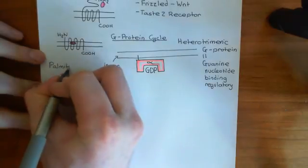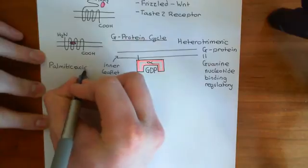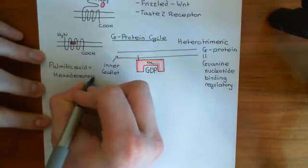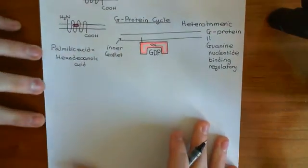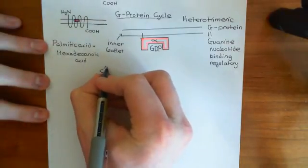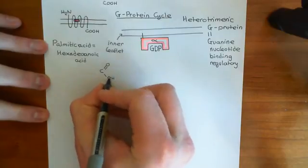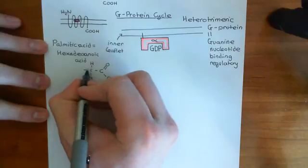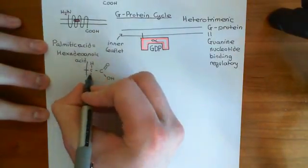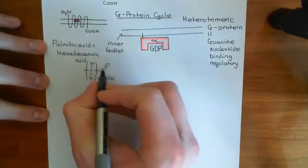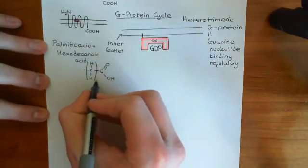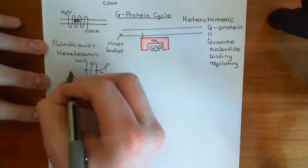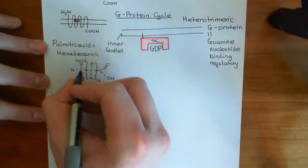They can either have a palmitic acid molecule or a myristic acid molecule sticking off the side of them, and some of them even have both. Palmitic acid is the old biochemist's name for a molecule that would now be called hexadecanoic acid — a 16-carbon, fully-saturated carboxylic acid. Here is the carboxylic acid group; we then need 15 more carbons: 14 methylene groups — written with bracket subscript 14 — and then a methyl group on the end.